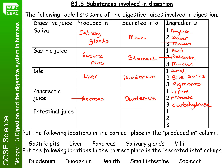The last digestive juice is intestinal juice. This is made in the villi and is secreted into the small intestine. Just like the pancreatic juice, it contains the three enzymes: lipase, protease, and carbohydrases.